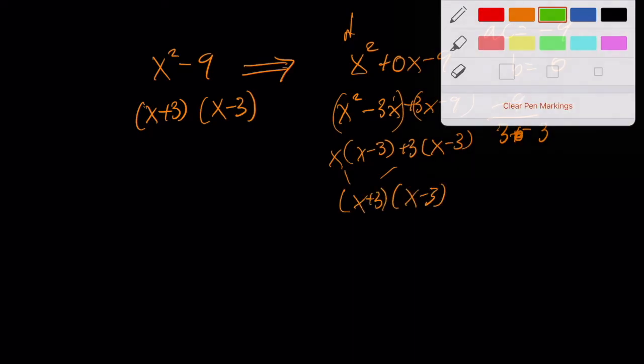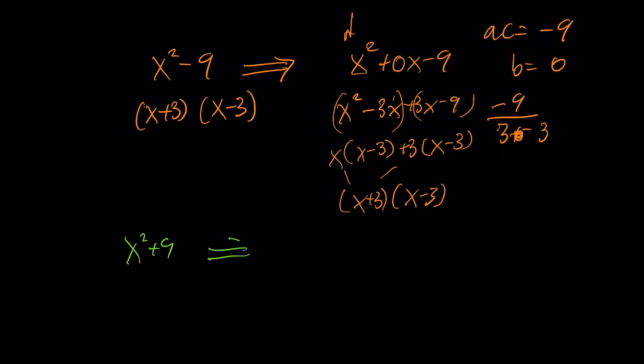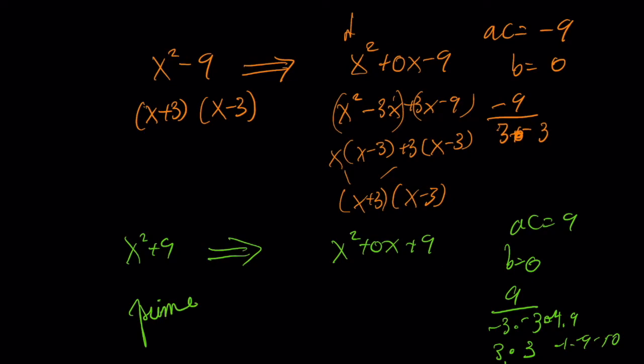But what if I had X² plus nine? Well, that's like saying, what are the factors of positive nine that add up to zero? Well, there are no factors of positive nine that add up to zero. Negative three and negative three would add up to negative six. Three and three would add up to six. One and nine would add up to ten. Negative one and negative nine would add up to negative ten. So this is prime. That's why we can never factor the sum of two squares.